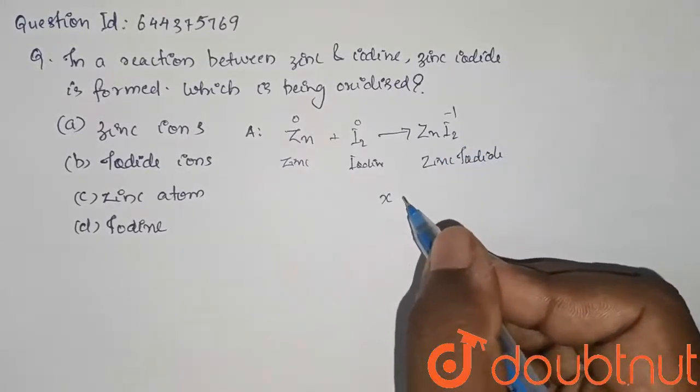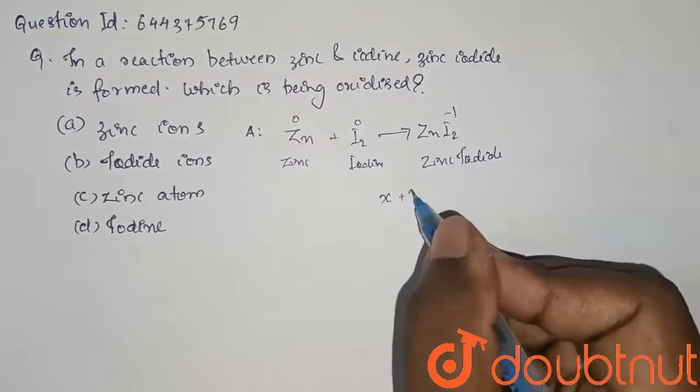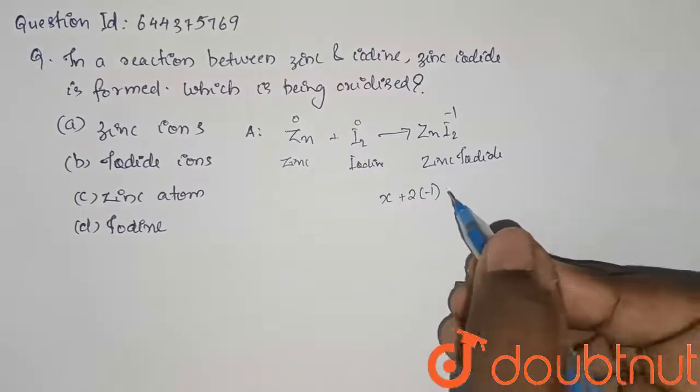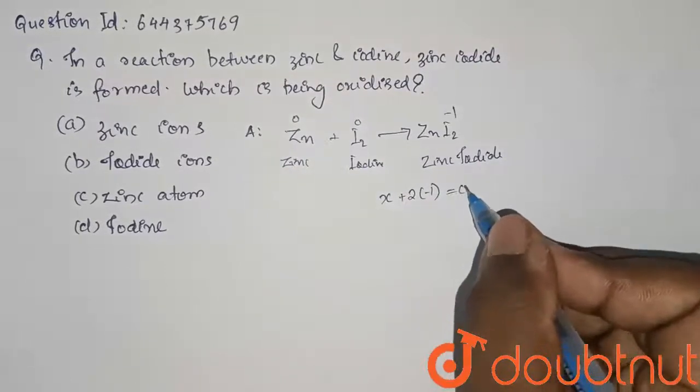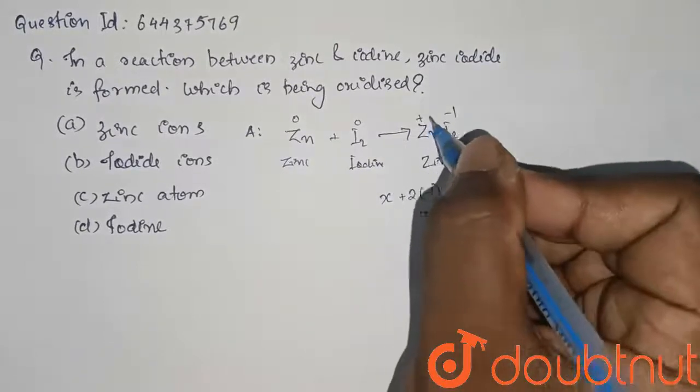X plus 2 into minus 1, as there are two iodine ions, is equal to 0. So X is equal to plus 2. So zinc, it is plus 2.